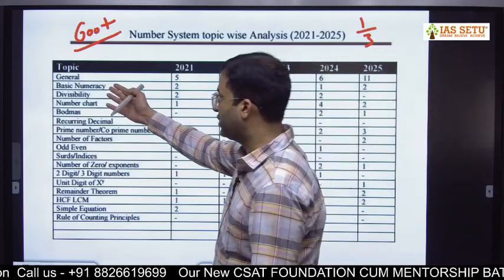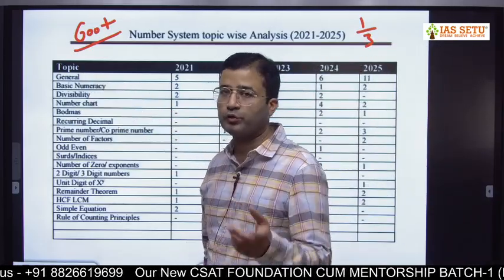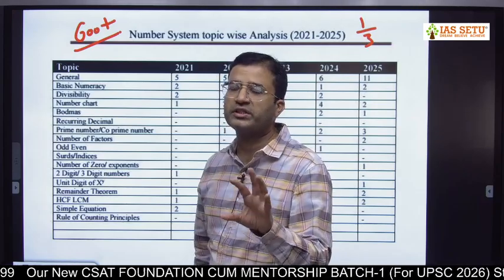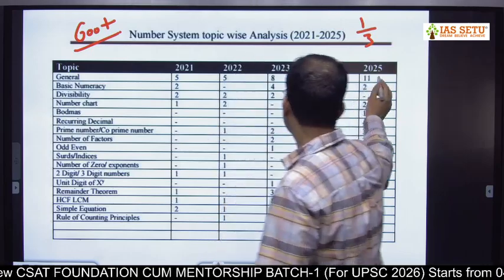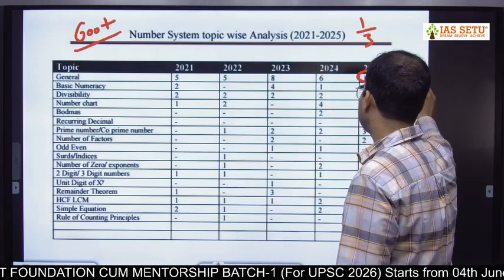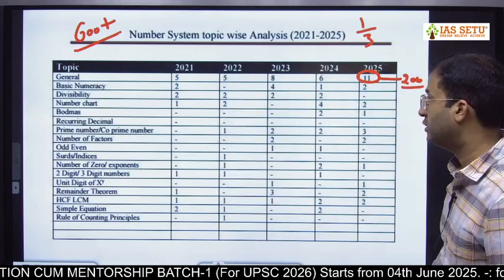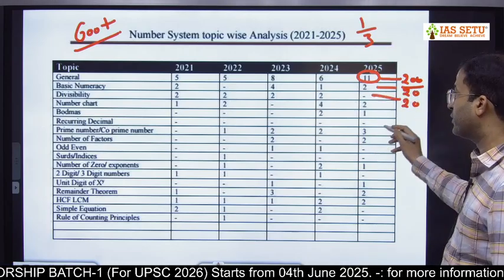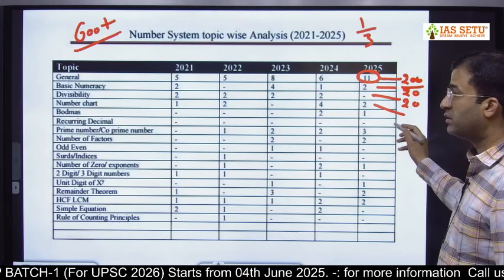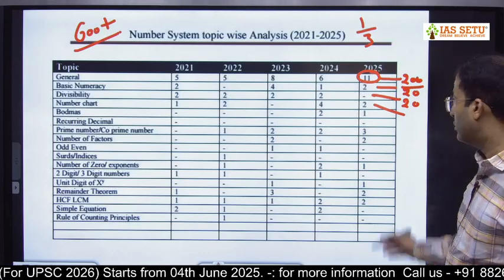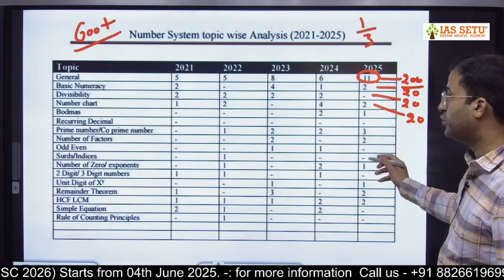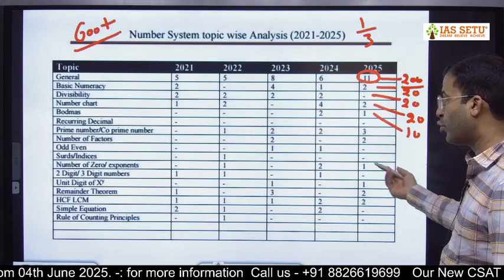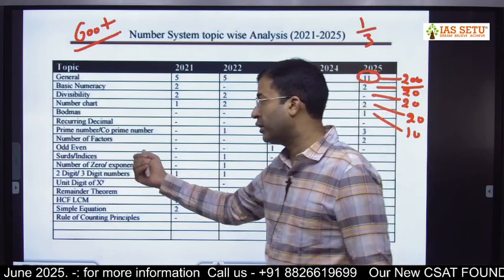These include journal topics with a mix of 2-3 topics, for which I will provide nearly 200 questions at that level. On basic numeracy, 20-plus questions. On divisibility, 20-plus questions. On number chart — rational numbers, irrational numbers — 20-plus questions. On BODMAS, around 10-plus questions. Topics also include recurring decimals, prime numbers, co-prime numbers, number of factors, and odd-even concepts.